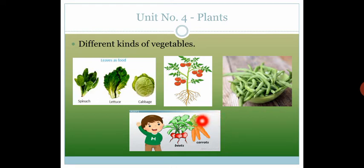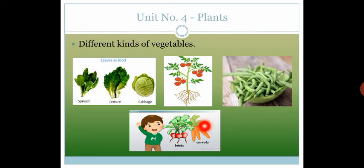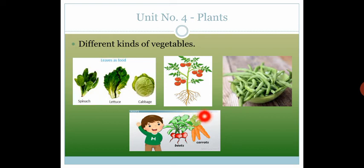Some vegetables are the roots of the plant and they grow underground — وہ زمین کے اندر grow کرتی ہیں، plants کے اوپر نہیں۔ For example, carrots, beets, and radish — جو آپ کی مولی ہوتی ہے — and carrot, that is your gajar. These are all roots of the plant.